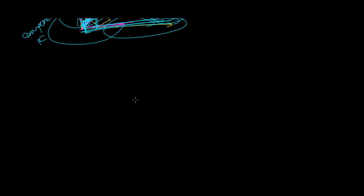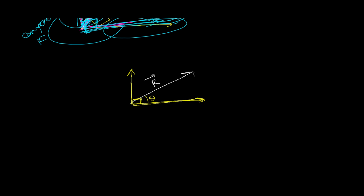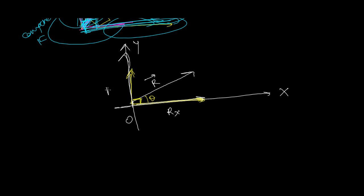So, resolution of vector works like this: if I have a vector R, and I try to split it into two equivalent mutually perpendicular vectors, the components must always be mutually perpendicular. One will be along this axis and another will be perpendicular to it, at 90 degrees. Let's say the angle is theta. It is better to understand by using a coordinate axis — let's say this is the x-axis and this is the y-axis, with this as the origin.